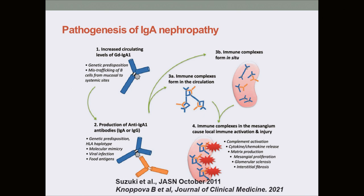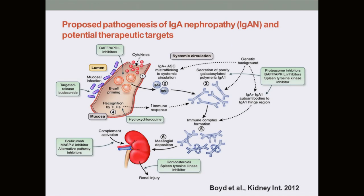The pathogenesis was initially described as a four-step multi-hit model: increased circulating levels of galactose-deficient immunoglobulin A1, formation of antibodies against galactose-deficient IgA1, immune complex deposition, and ultimately inflammation. The latest knowledge is expanding and we know the detailed pathogenesis starts from the mucosal lumen with B-cell priming, leading to the formation of immunoglobulin-deficient IGA and then the subsequent steps.